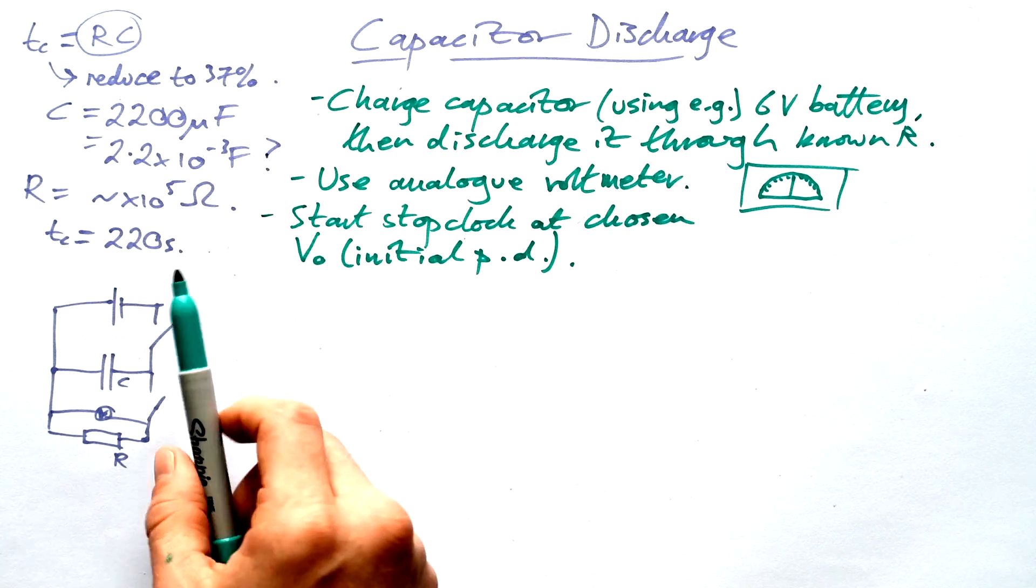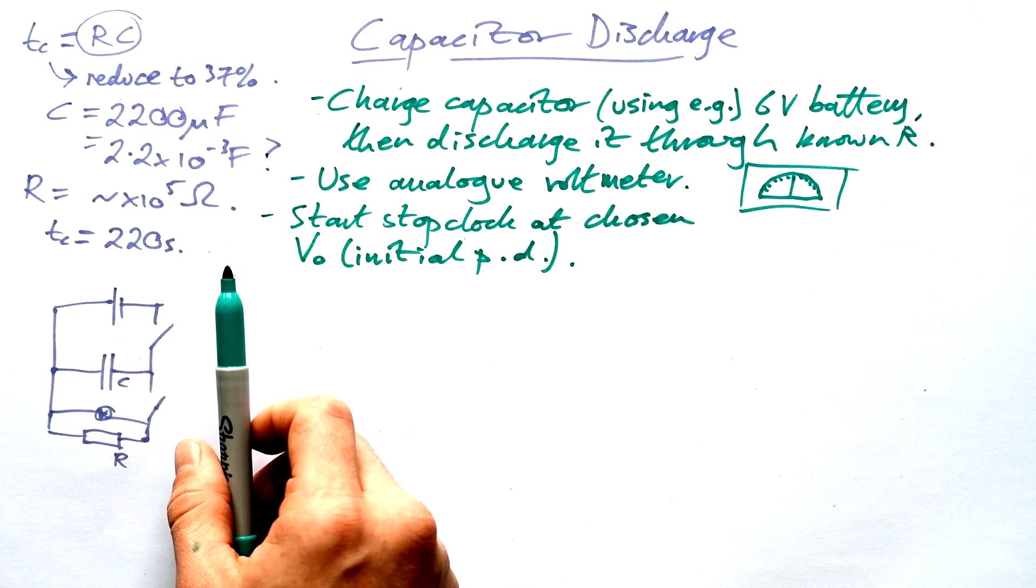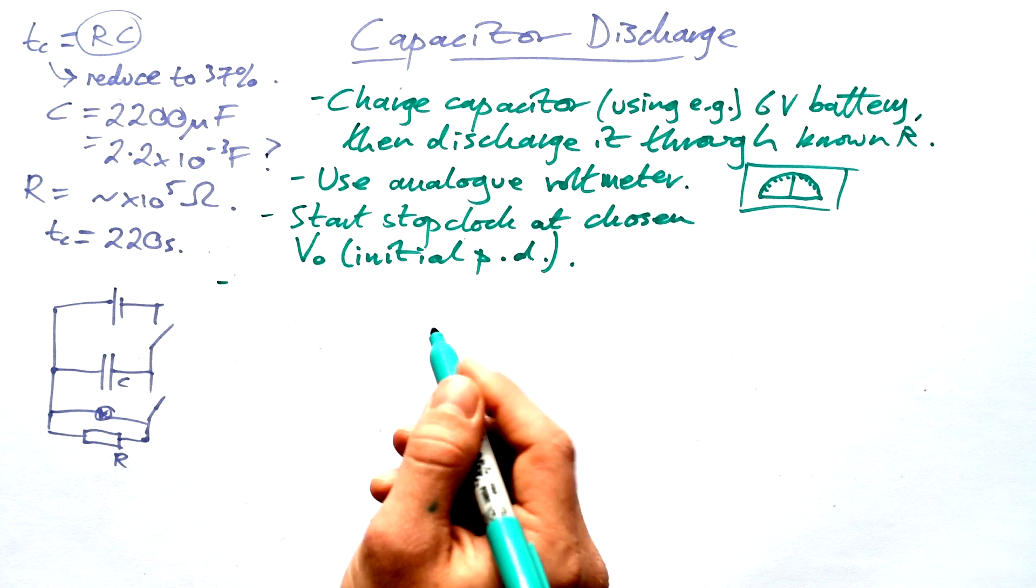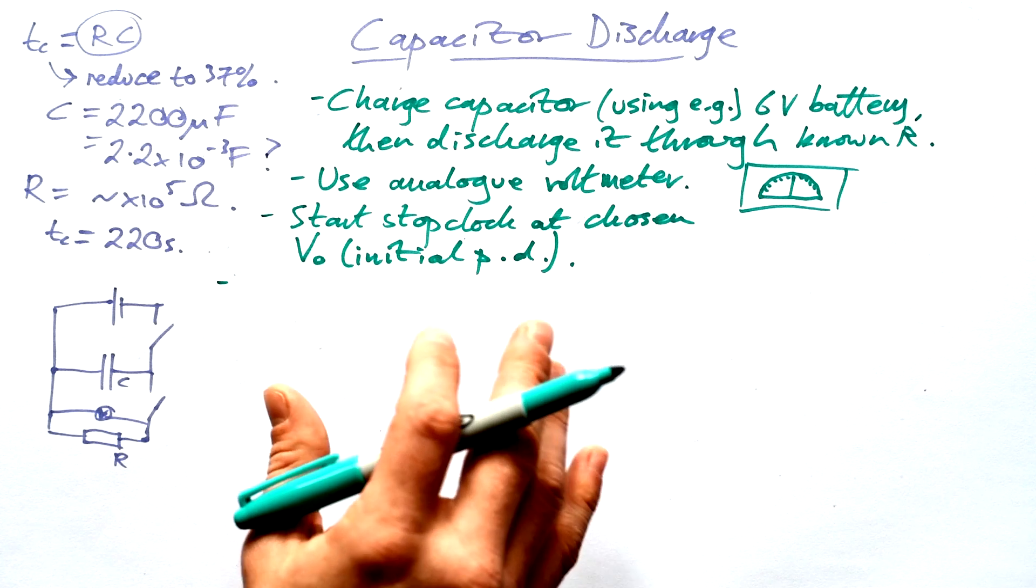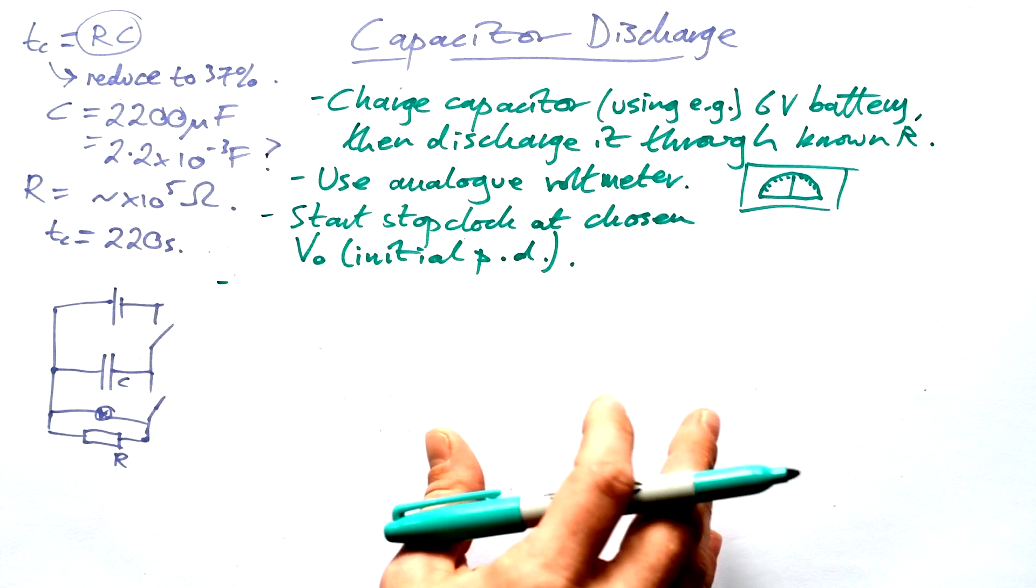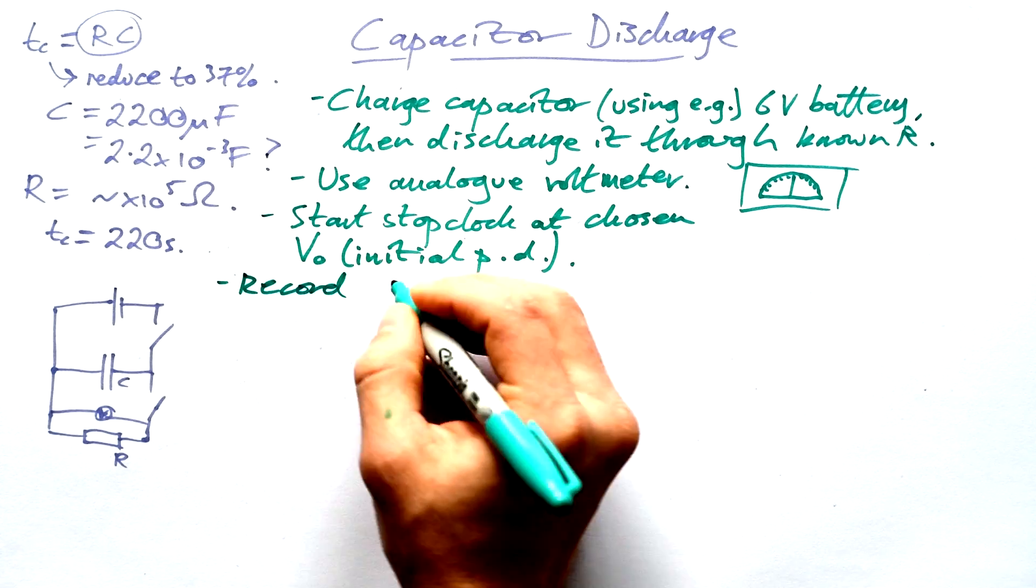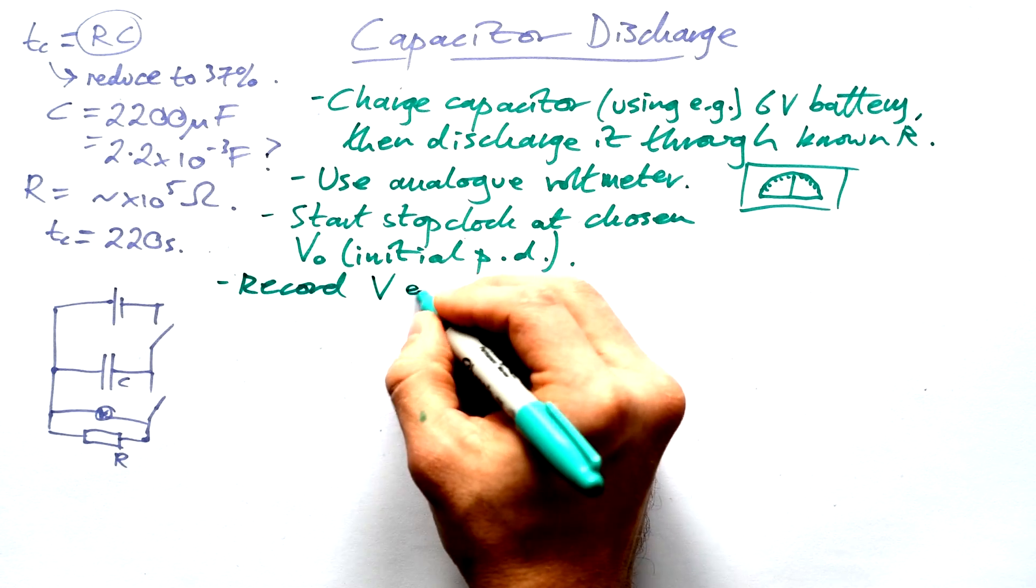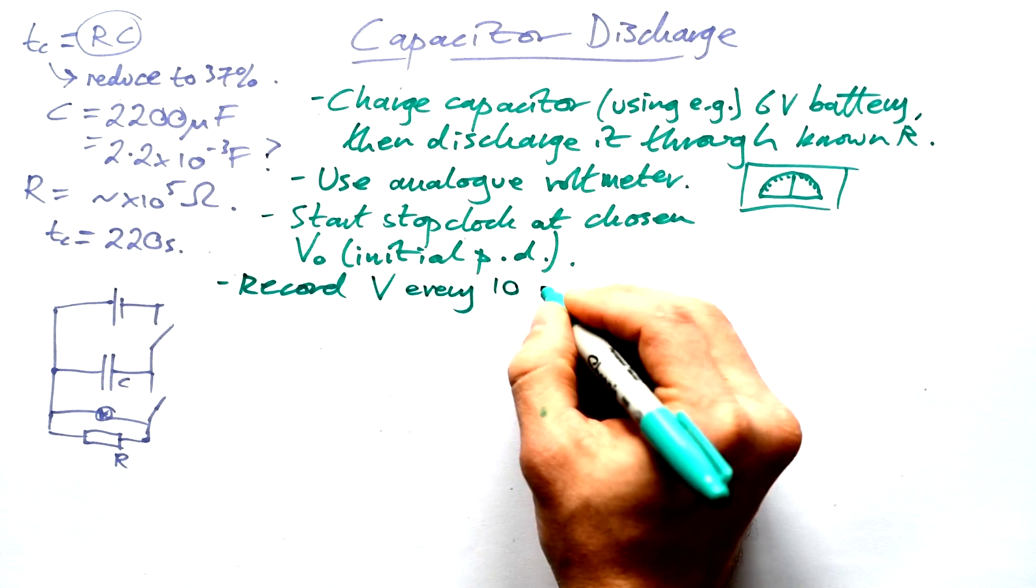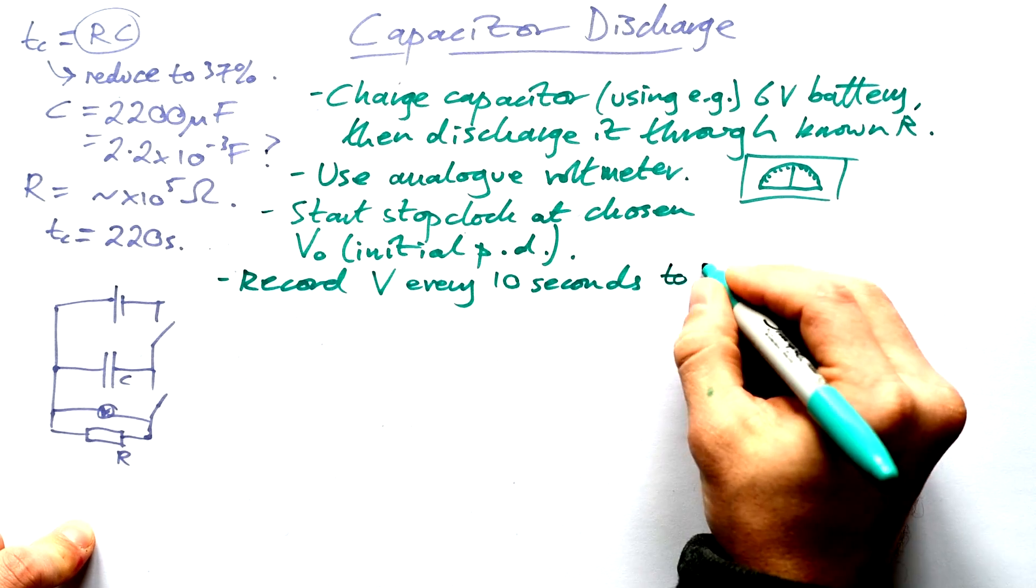The only difference is that if you choose the same initial PD, then that allows you to draw a different type of graph as well. And again, there's two ways that we can do it. Either we can say every 10 seconds we're going to record the PD, or we can say every volt we want to see what the time is. The former is the better, though. We're going to record the PD across the capacitor every 10 seconds. And it's up to you how long you do it for. But let's say you go to 100 seconds.